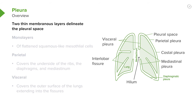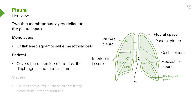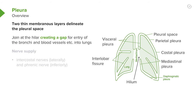The pleura are two layers which consist of flattened squamous mesothelial cells — a single monolayer — which covers the underside of the thoracic cavity, so the ribs and the muscles of the thoracic cavity form the parietal pleura, and the surface of the lung is covered by the visceral pleura, with a small gap between the two.